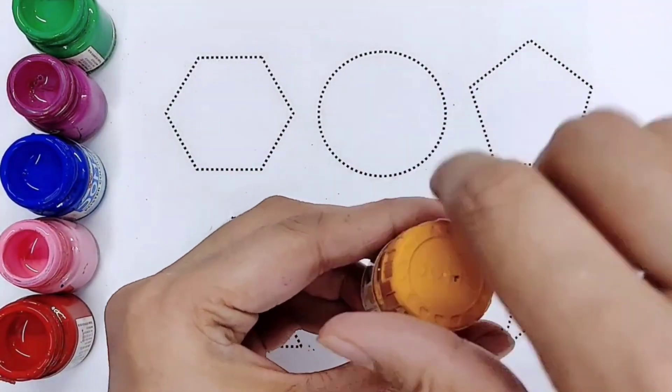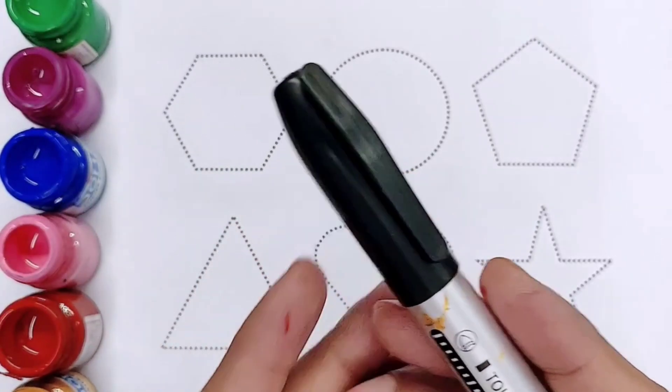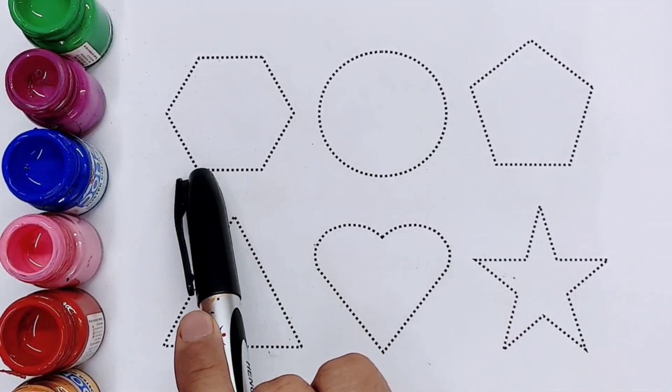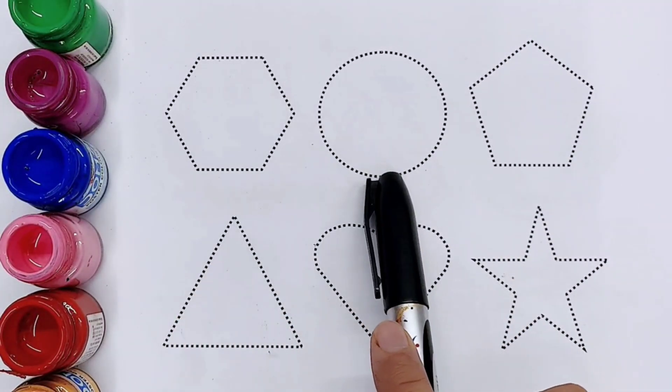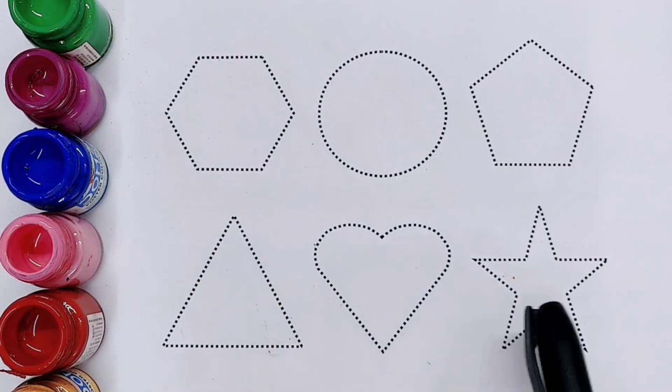Red color, it's red color. Golden color, golden color. Kids, this is black color, black color. Kids, this is hexagon, circle, pentagon. This is triangle, heart, star.